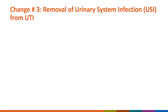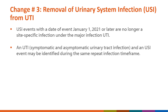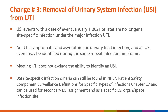The third change to the UTI protocol is the removal of the urinary system infection, or UCI, event. UCI events with a date of event January 1, 2021 or later will no longer be a site-specific infection under the major infection UTI. A UTI — symptomatic and asymptomatic urinary tract infection — and a UCI event can be identified during the same repeat infection timeframe, meaning UTI does not exclude the ability to identify a UCI. UCI site-specific infection criteria can still be found in the NHSN Patient Safety Component Surveillance Definitions for Specific Types of Infections, Chapter 17, and can be used for secondary BSI assignment and as a specific organ space infection site.